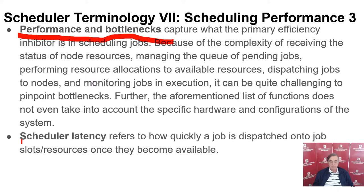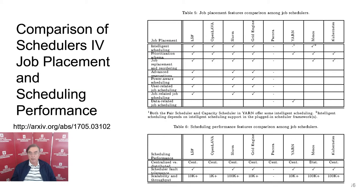Then we have latency — how long does it take to actually get started, from the time a job is submitted to when it gets scheduled and runs. That's particularly true when doing real-time scheduling for interactive work where you obviously want to run very quickly. Tables 5 and 6 just tell you what the features are, and again you will see that HPC has more features — of course, because these are much older systems, 20 years old or more.